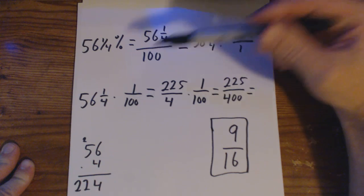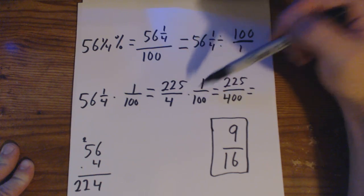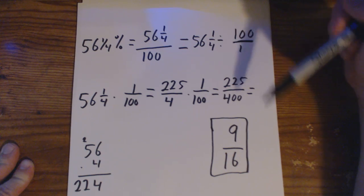Division, changing it to multiplication with a reciprocal, converting it into an improper fraction and finally multiplying it and simplifying it to get your answer.